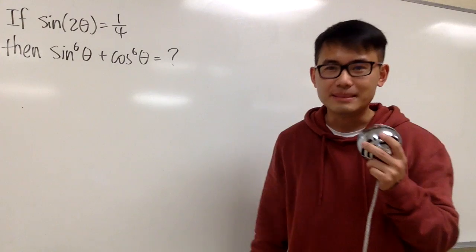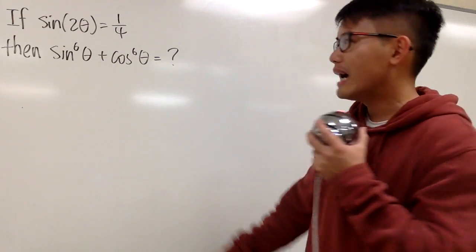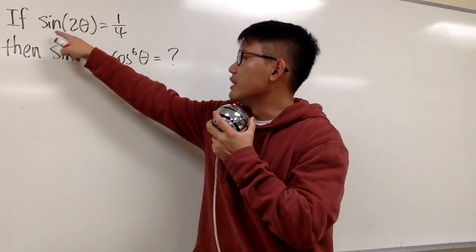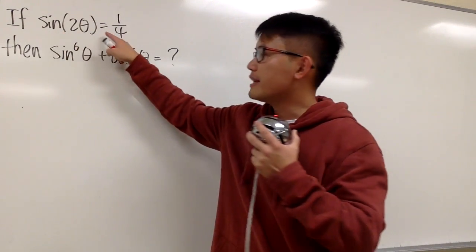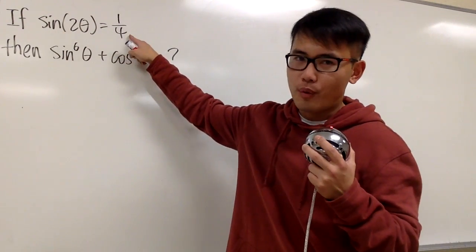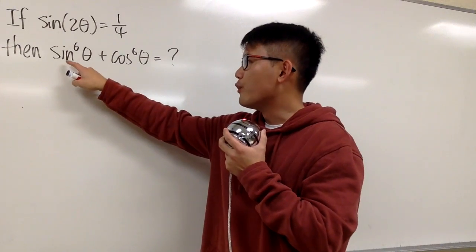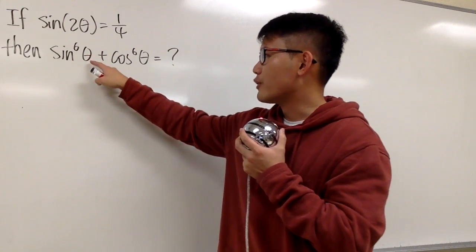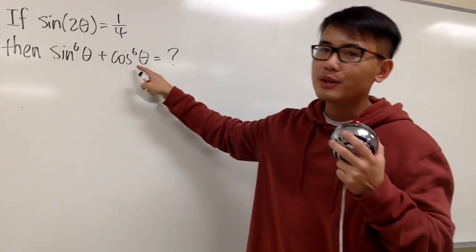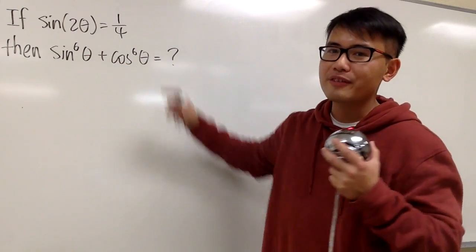Let's do some math for fun, and this is about a trick. Here we have the condition: if sine of 2θ is equal to 1/4, we are going to figure out the value for sin⁶θ + cos⁶θ.